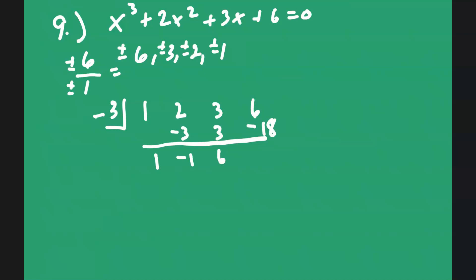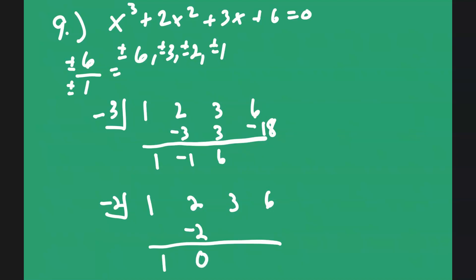Let's try negative 2. With coefficients 1, 2, 3, 6: bring down 1. Negative 2 times 1 is negative 2, giving 0. Negative 2 times 0 is 0, giving 3. Negative 2 times 3 is negative 6, and 6 minus 6 is 0. So our first zero is x equals negative 2. Remember the fundamental theorem of algebra — this tells you the number of zeros. We have a new polynomial after factoring it down.